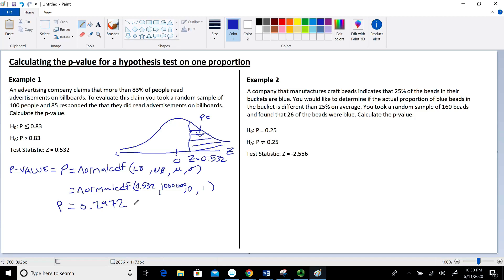Now for another example that's slightly different. A company manufactures beads and says that 25% of the beads in their bucket are blue. We'd like to determine if the actual proportion is different than 25%. We took a random sample of 160 beads and found that 26 were blue.